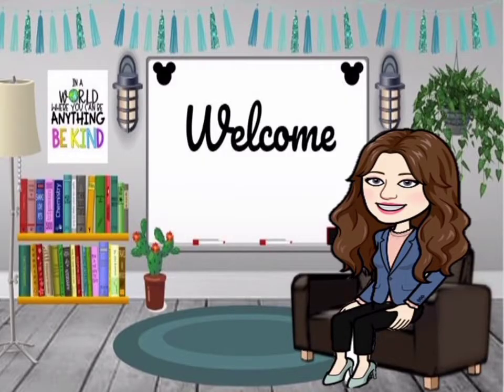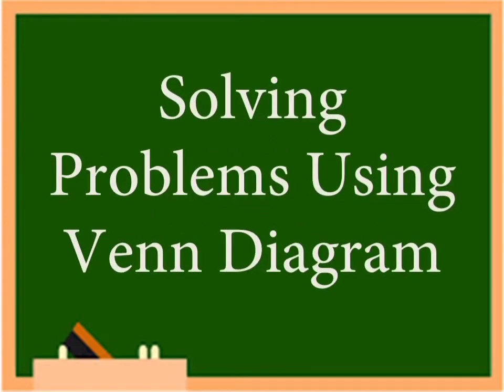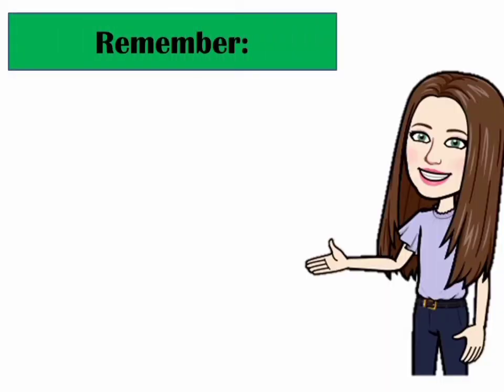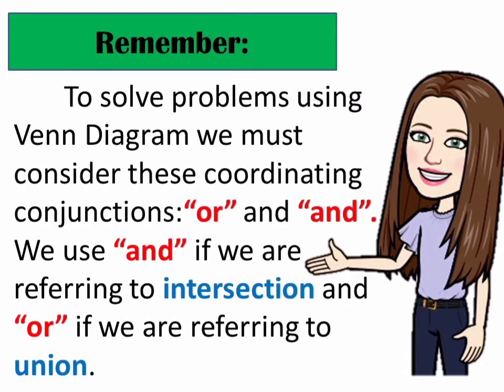Hello everyone, it's me again, Teacher Shek. Today, we are going to discuss about solving problems using Venn Diagram. But before we start, let us remember that to solve problems using Venn Diagram, we must consider this coordinating conjunction — the OR and AND. We use AND if we are referring to intersection, and OR if we are referring to union.